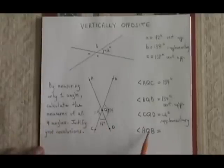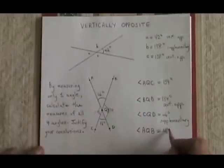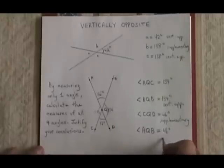Finally, angle AQB is vertically opposite to angle CQD, so it is also 46 degrees. I write in its measure, and I justify it by saying vertically opposite.